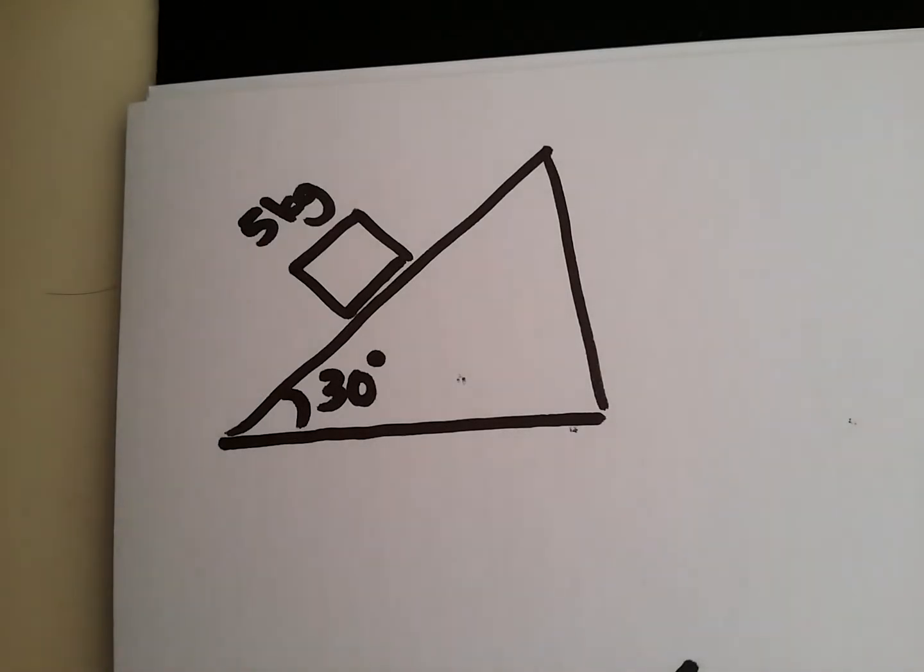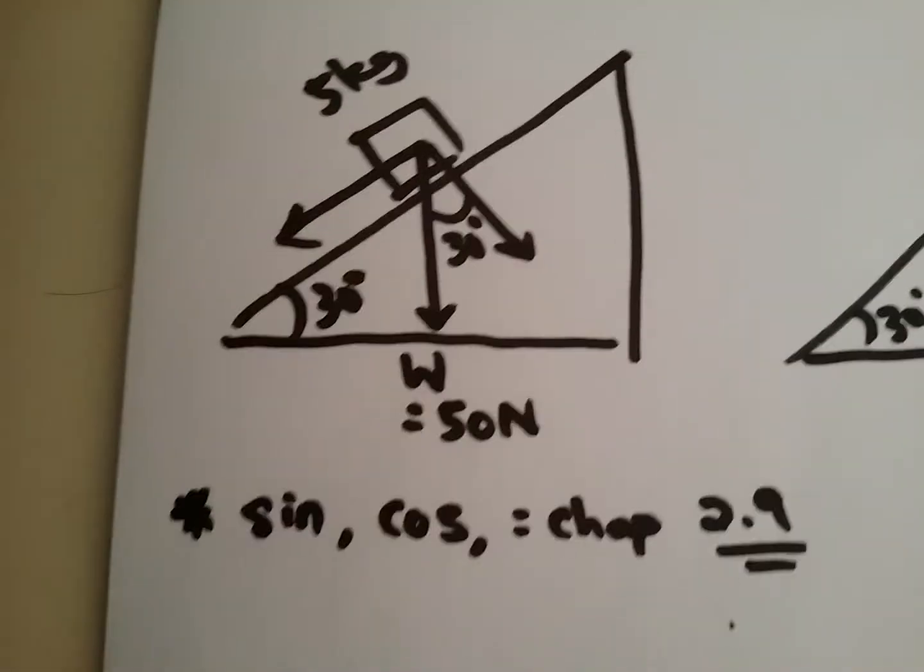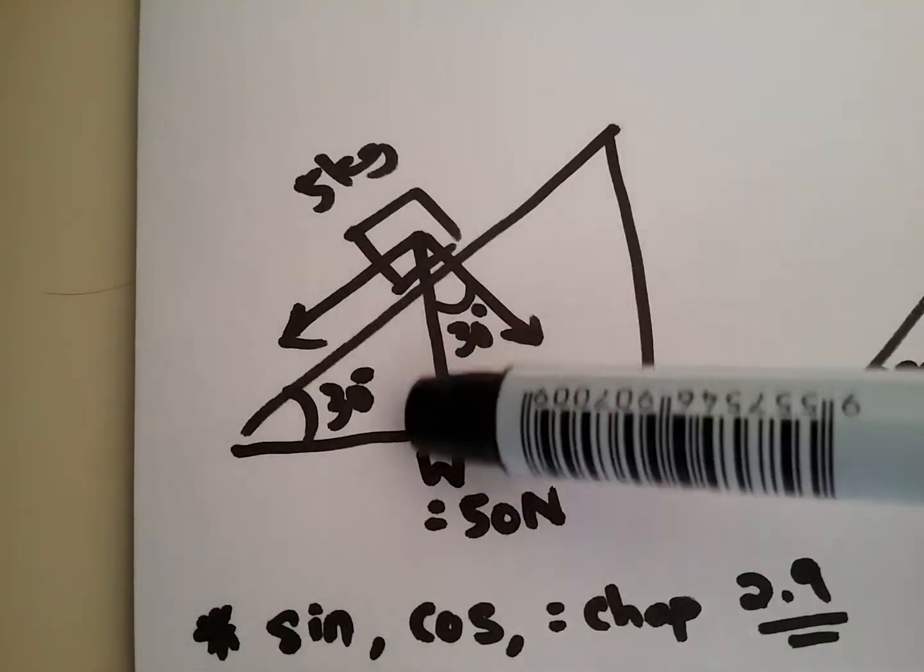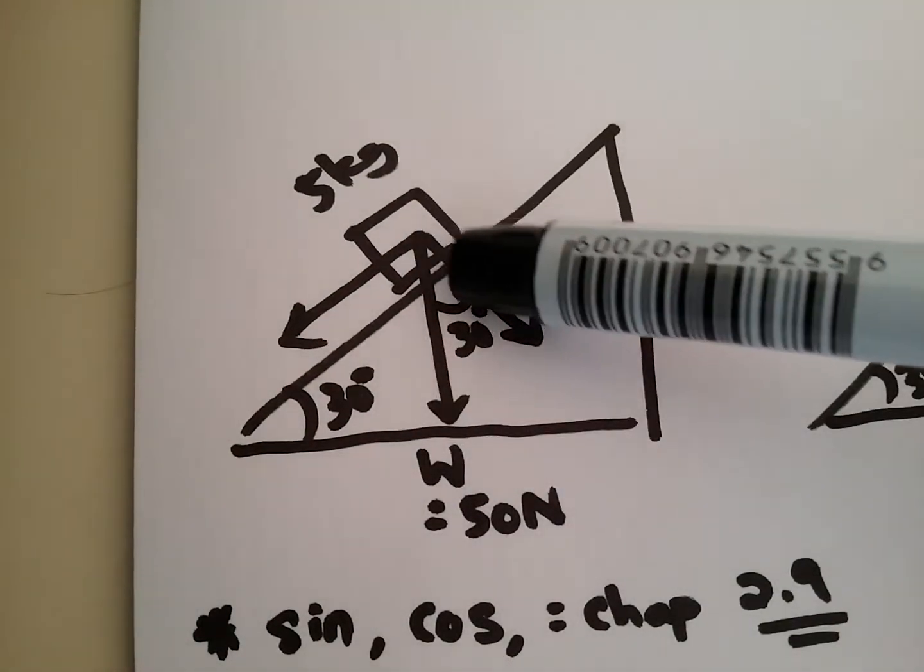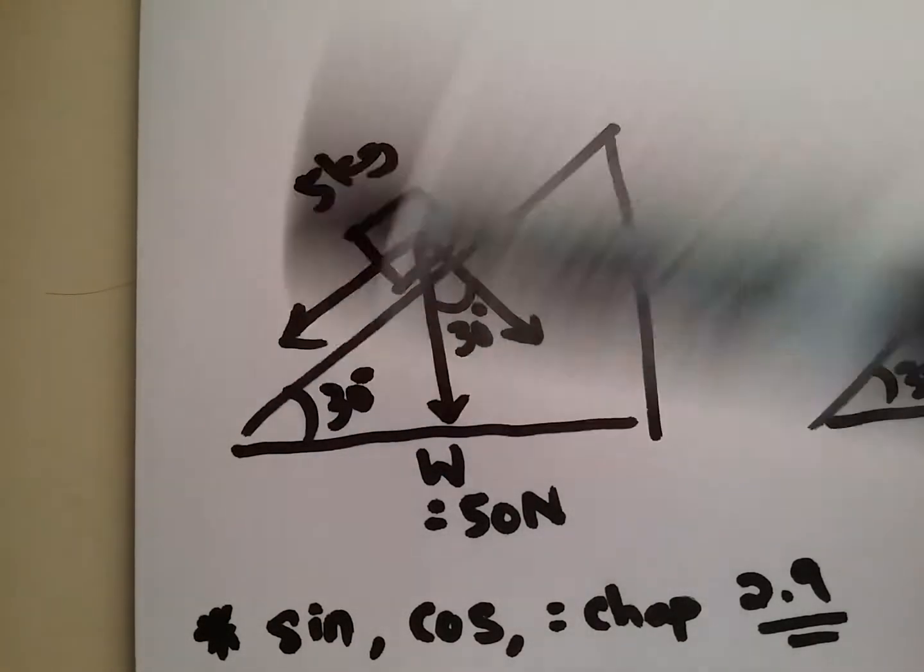In order to start moving into this kind of inclined plane questions, I require my students to first do the 3 arrows. So the completed 3 arrow diagram will look a little bit like this, whereby you have one arrow which moves vertically downwards, one arrow which is perpendicular to the plane, and one which is actually parallel to the plane.